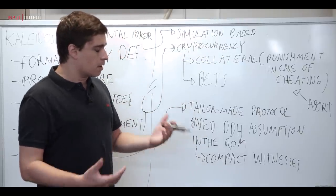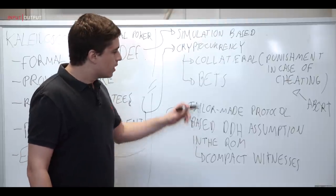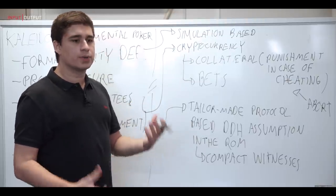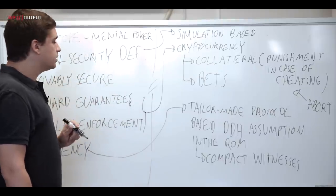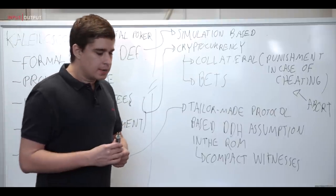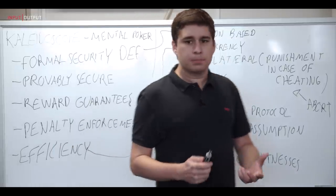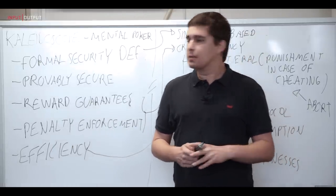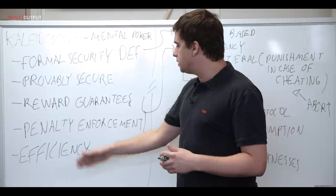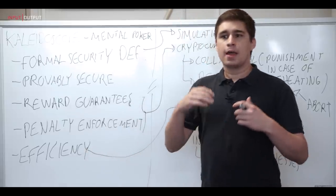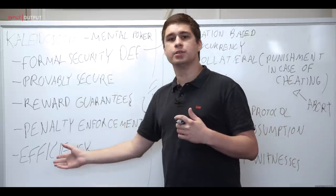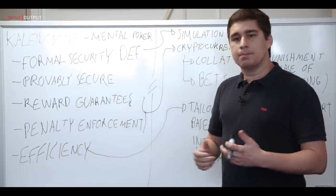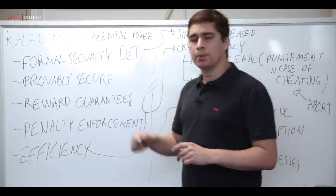So that's the basic general structure of the protocol. And we fortunately are able to show that a protocol with these characteristics is actually secure according to our formal security definition. Being the first actual tailor-made poker protocol that provides reward guarantees, penalty enforcement, and provable security while keeping efficiency. That's the basic structure of the Kaleidoscope protocol.